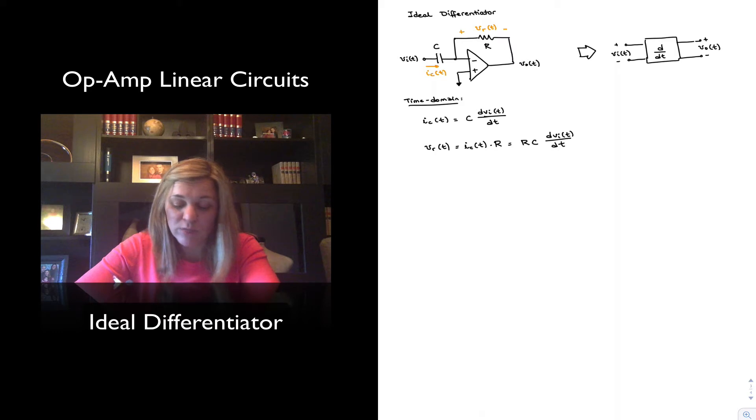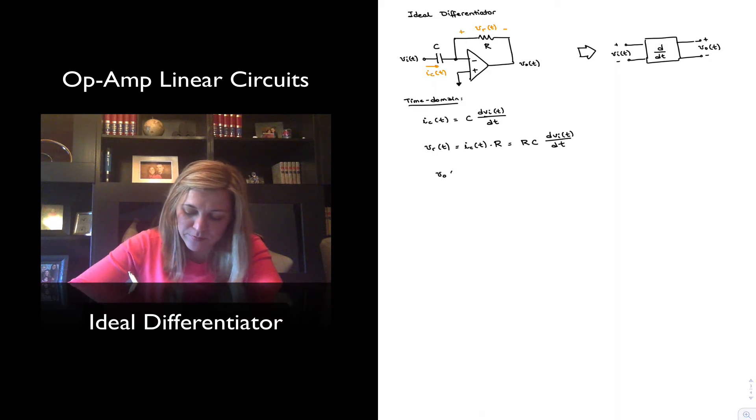By looking at the circuit, we can observe that the expression for Vout of t, V0, is actually equal to negative VR. Again, since the negative input terminal of the op-amp is sitting at the voltage of ground. And so Vout of t is equal to negative VR of t, which will be equal to negative RC dVin/dt.